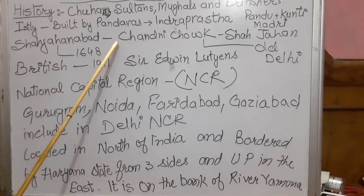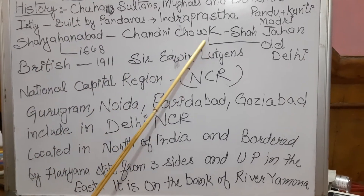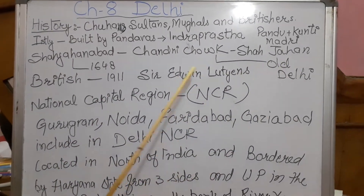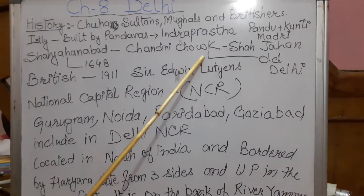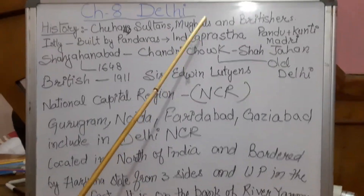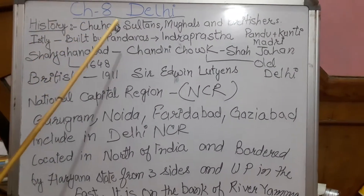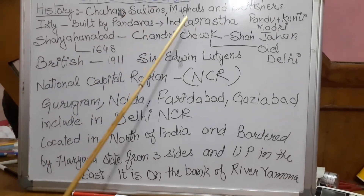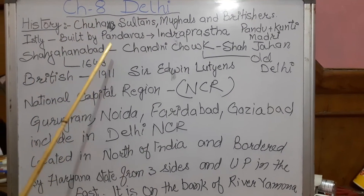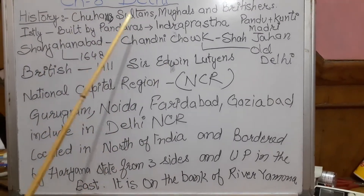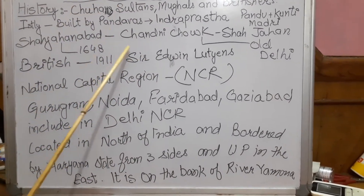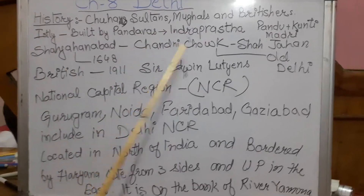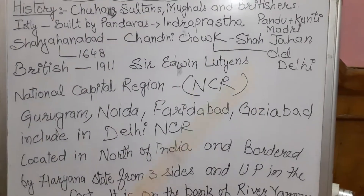Shahjahanabad nowadays is known as Chandni Chowk and it is in Old Delhi. In Chandni Chowk, there are many beautiful Havelis built by Shah Jahan, and these Havelis have more than 200 rooms. There are many beautiful courtyards, gardens, fountains, marble floors, and jharokas in these Havelis.